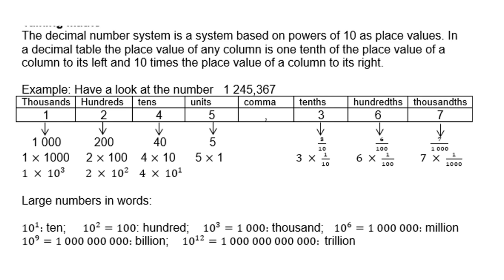The 3 represents 3 tenths, which is 3 times 1 over 10. The 6 represents the hundredths, which is 6 times a hundredth. And the 7 represents the thousandths, which of course is 7 over a thousand, which is 7 times a thousandth.